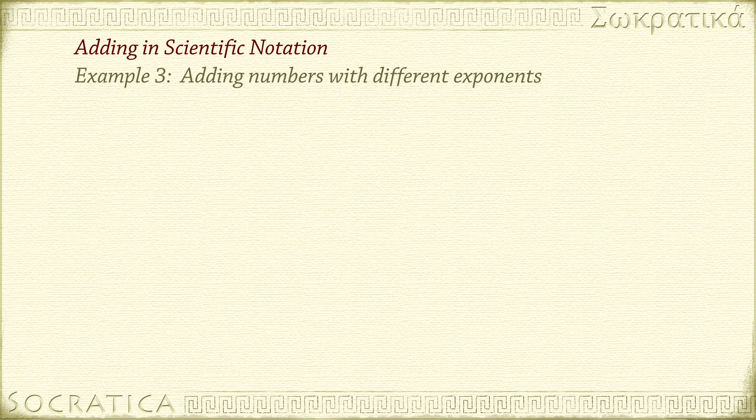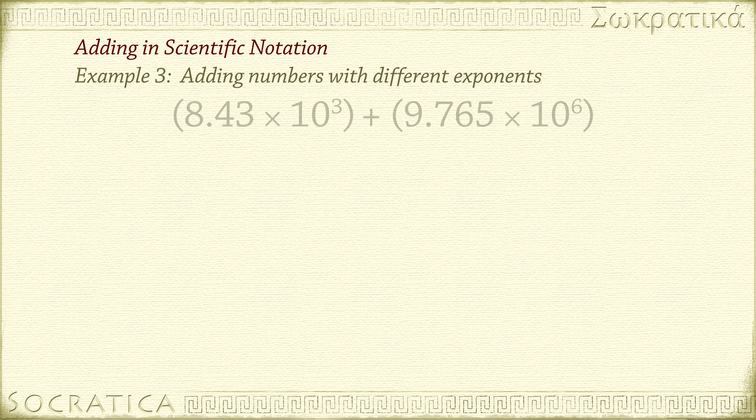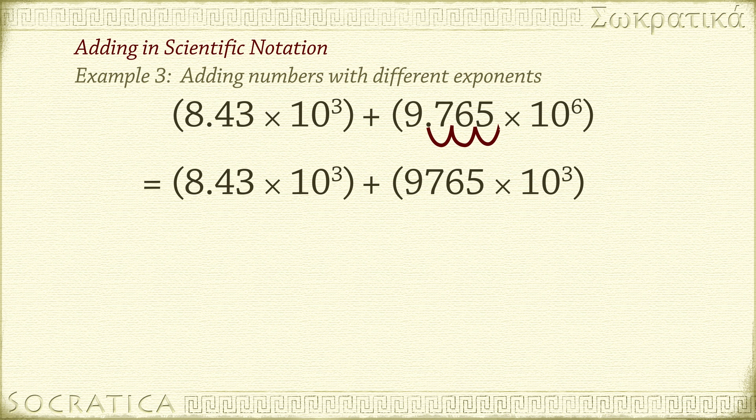What do we do when the exponents are different? We'll need to manipulate the numbers so they have the same exponents. This involves moving the decimal point. For example, if we do this calculation: 8.43 times 10 to the negative 3, plus 9.765 times 10 to the negative 6, we need to shift the decimal point on one of these numbers, so the exponents match. Let's move the decimal point on 9.765 times 10 to the negative 6, so we have 10 to the negative 3. To do that, we move the decimal to the right three places. Now that these two numbers have the same base and exponents, we can just add their coefficients.